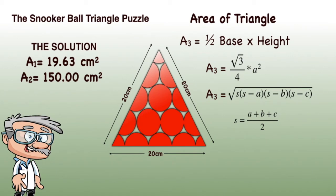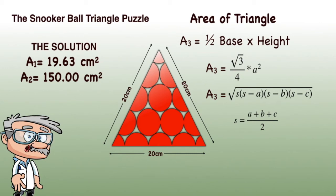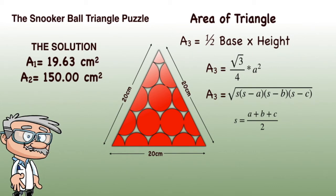Or, there is a formula for the area of any triangle, which I'm going to use in this case. The length of one side is 4 snooker ball diameters, that is 20 centimeters. So here, in this formula, A equals B equals C, and each are 20 centimeters.